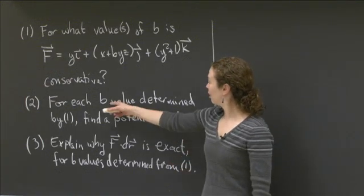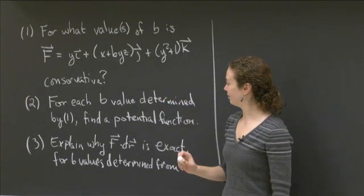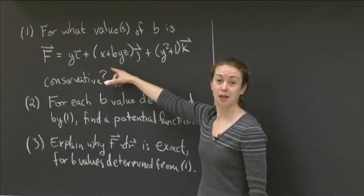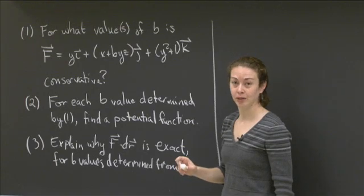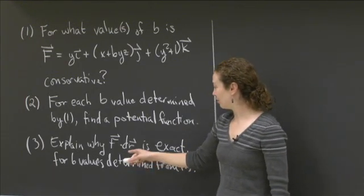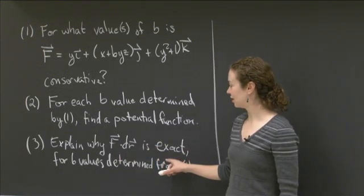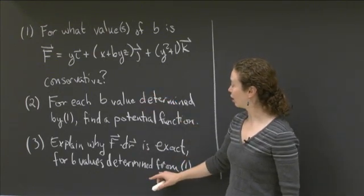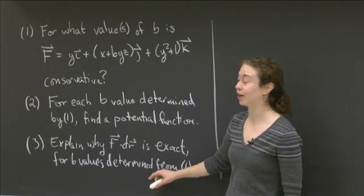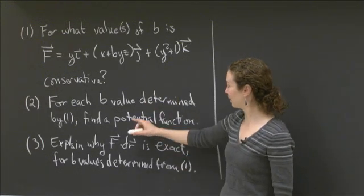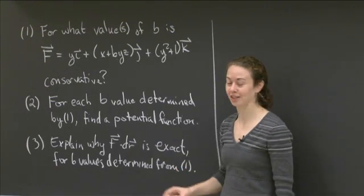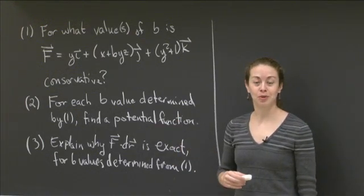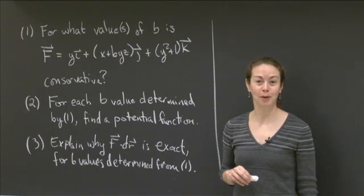The second part of this problem is: for each b value you determined from part 1, find a potential function. Fix one of the acceptable b values and find a potential function. The third part says to explain why F·dr is exact — obviously for the b values determined from part 1. So parts 2 and 3 use only those b values that make F conservative. Why don't you pause the video, work on these three problems, and bring it back when you're ready.